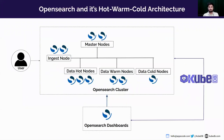OpenSearch is an open-source search and analytics engine designed to provide powerful and scalable search capabilities for various data types including text, numeric, and geospatial data. It is an open-source alternative to Elasticsearch, offering a high level of flexibility and customization for building search and analytic solutions for data-driven applications.